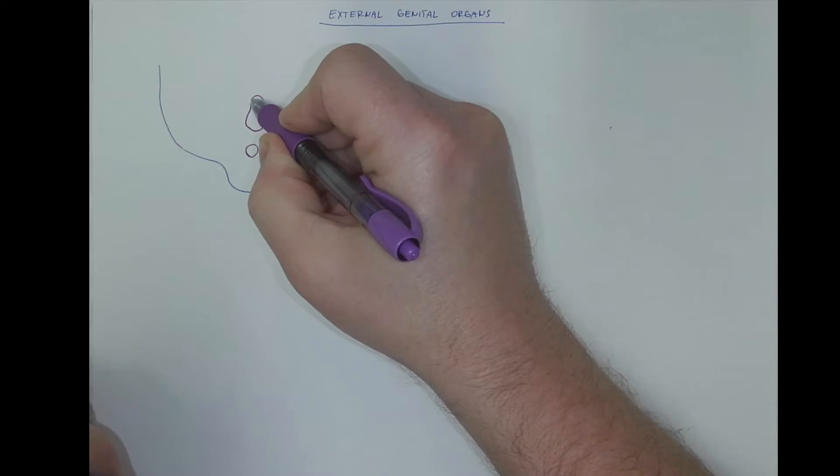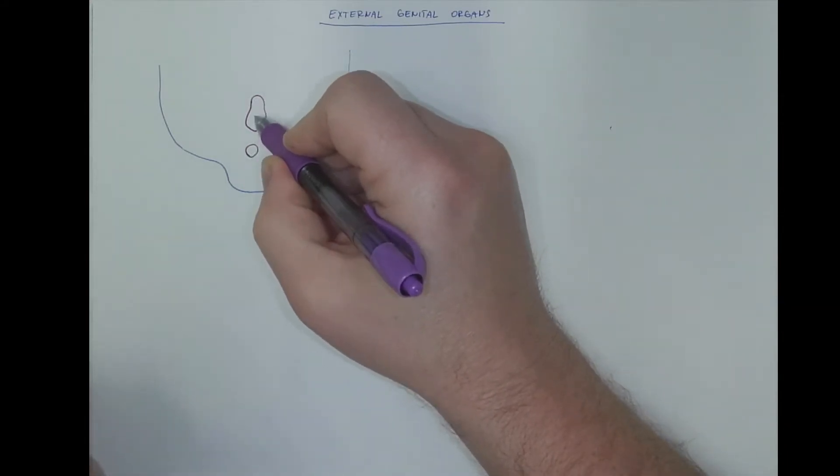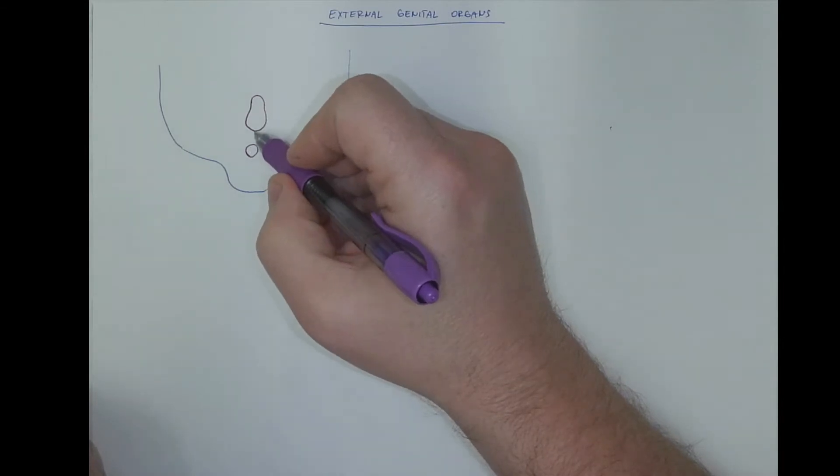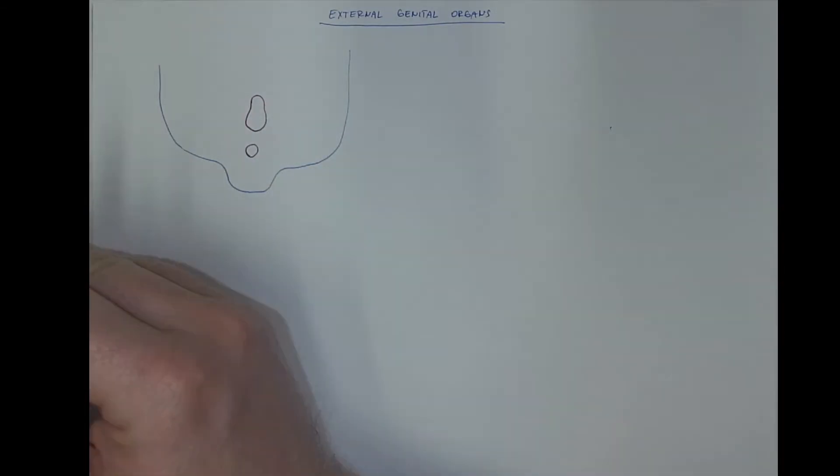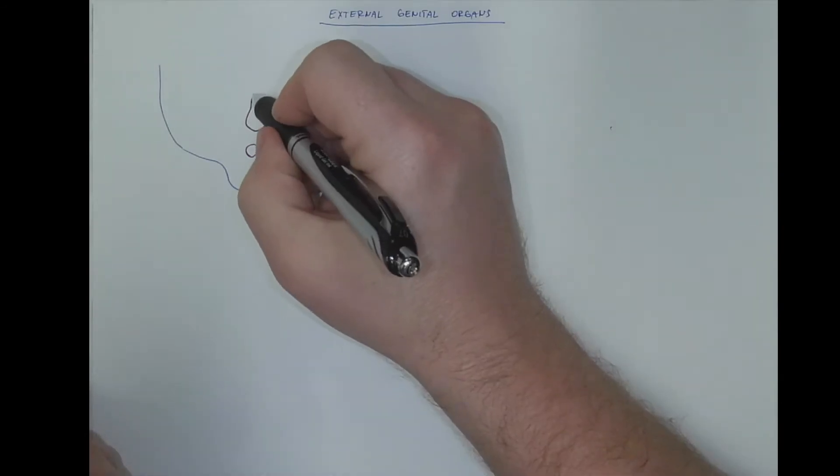The anorectal canal and the urogenital sinus resulted from division of the cloaca, and we have two folds here that are elevated on both sides of the urogenital sinus.